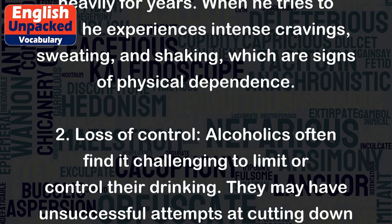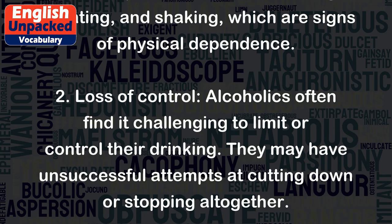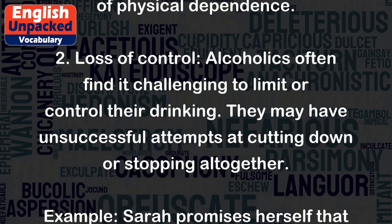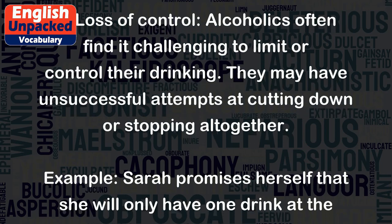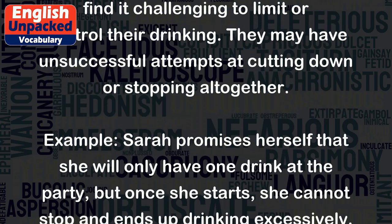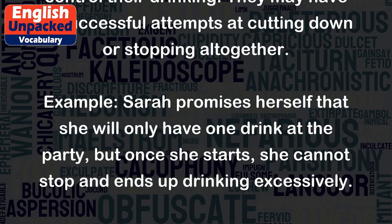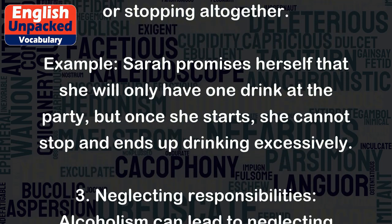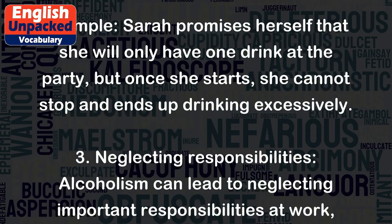2. Loss of Control: Alcoholics often find it challenging to limit or control their drinking. They may have unsuccessful attempts at cutting down or stopping altogether. Example: Sarah promises herself that she will only have one drink at the party, but once she starts, she cannot stop and ends up drinking excessively.